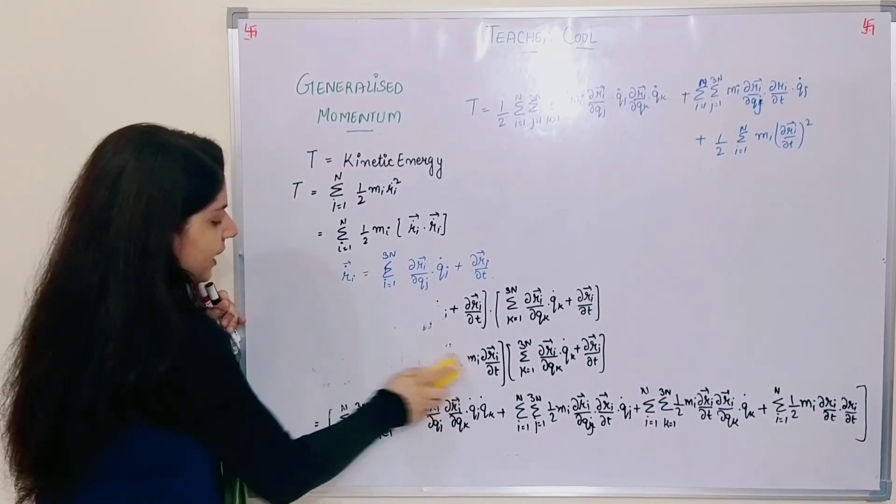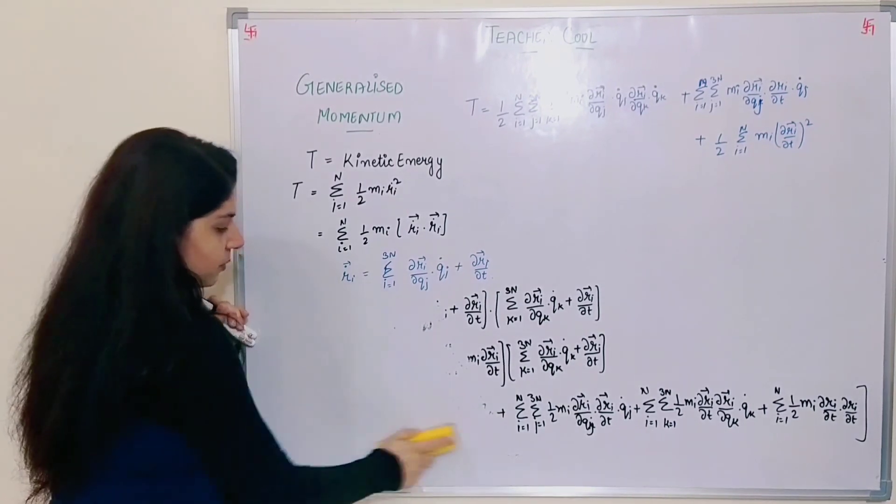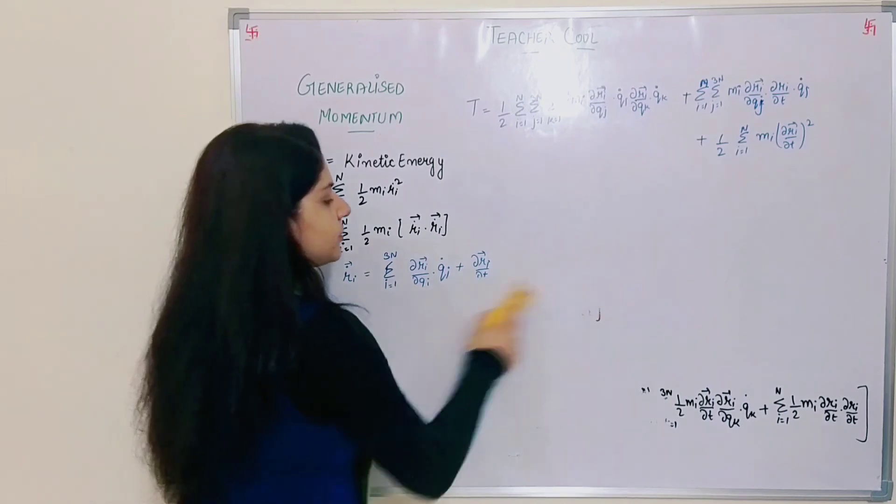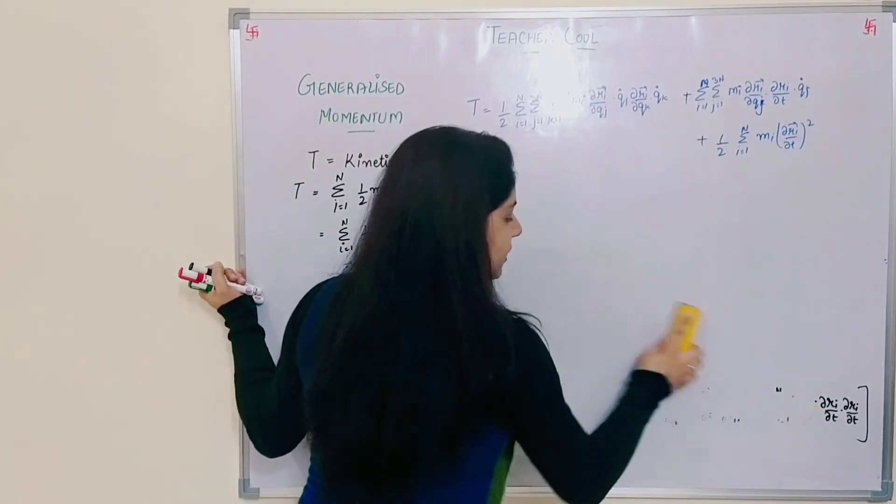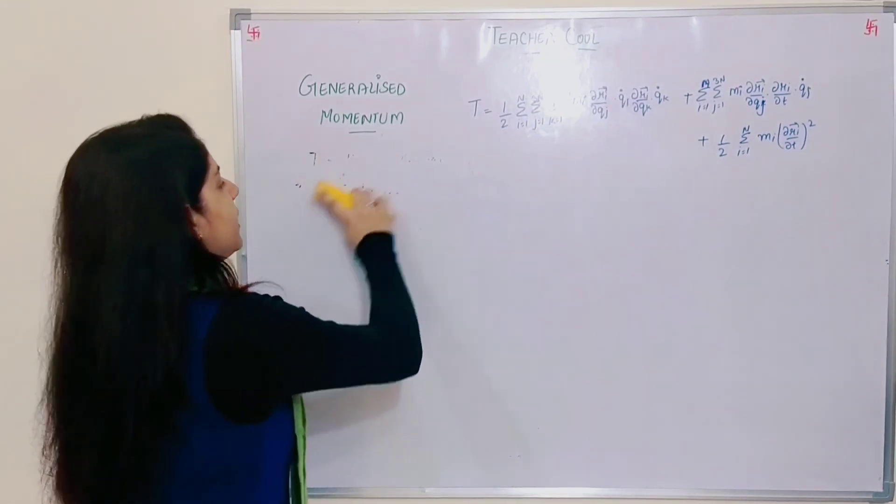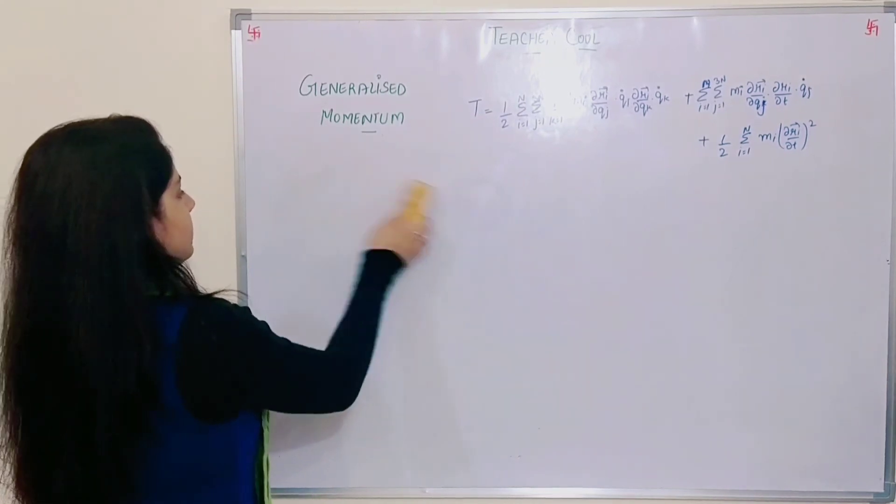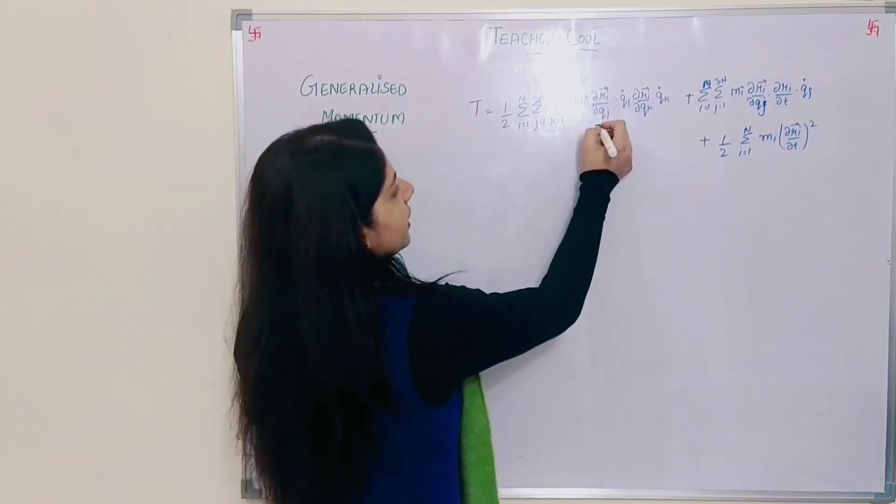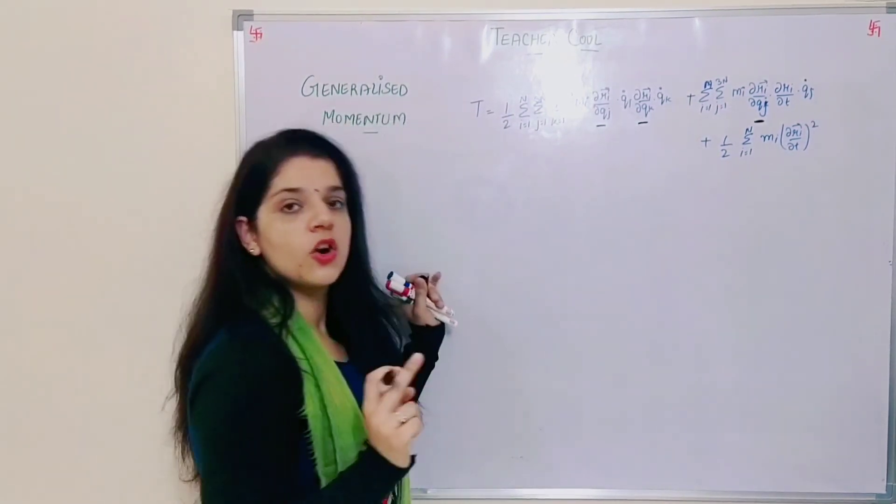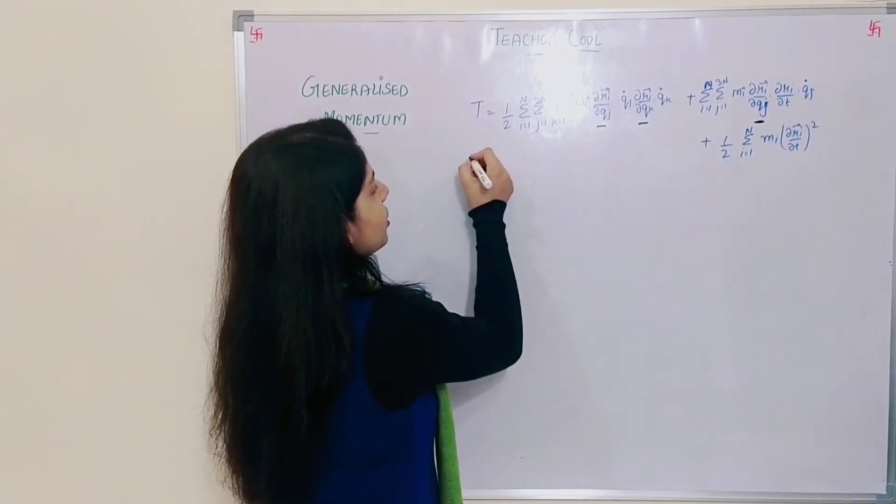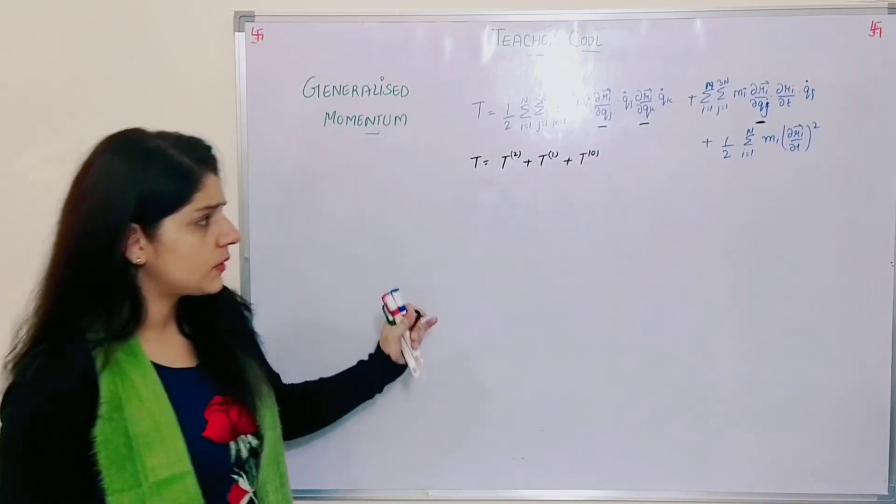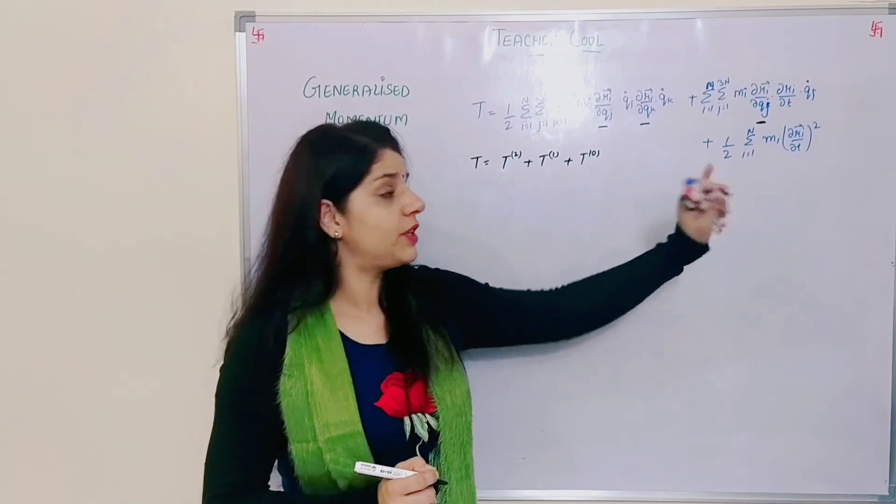If we observe, kinetic energy is normally just half mv square when we talk about linear motion. But here we have three types of terms with different derivative orders and summation orders. The first term has double order derivatives with respect to generalized coordinates - that's second order. The second term has one derivative with respect to generalized coordinates - first order. The third term has no derivatives with respect to generalized coordinates - zero order. So T can be written as T second order plus T first order plus T zero order.